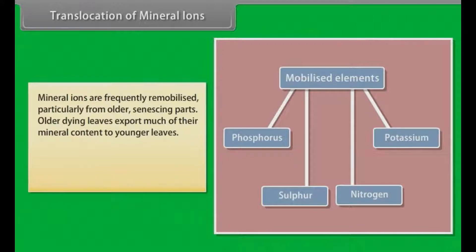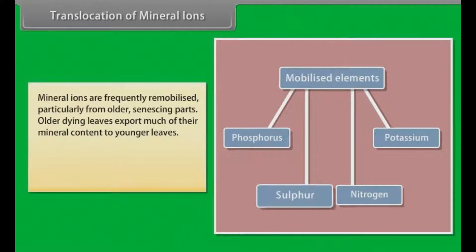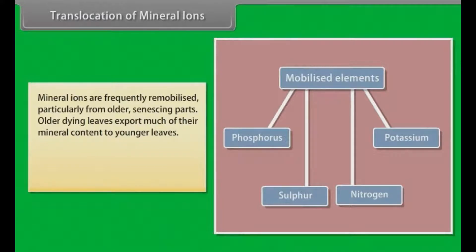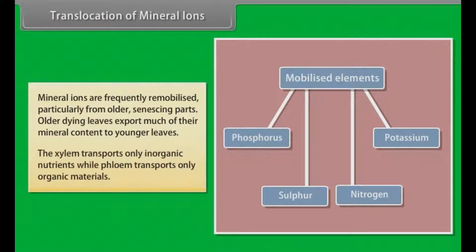Older dying leaves export much of their mineral content to younger leaves. Similarly, before leaf fall in deciduous plants, minerals are removed to other parts. Elements most readily mobilized are phosphorus, sulfur, nitrogen, and potassium. Some elements that are structural components, like calcium, are not remobilized. The xylem transports only inorganic nutrients, while phloem transports only organic materials.